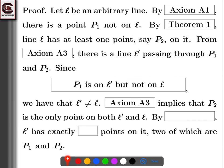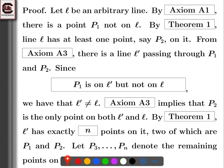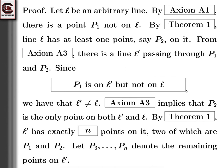L prime has exactly n points on it, two of which are P1 and P2. By Theorem 1, every line has exactly n points, so L prime has exactly n points. Let P3 through Pn denote the remaining points on L prime. We know there are n points total, P1 and P2 are already on L prime, so we call the other points P3 through Pn.